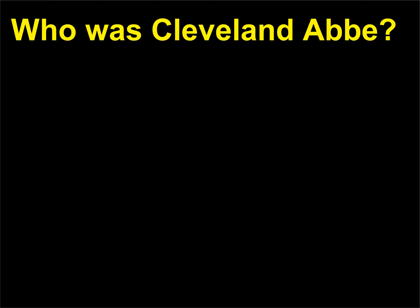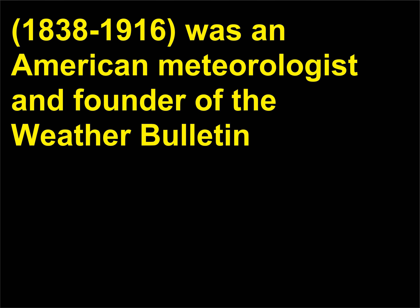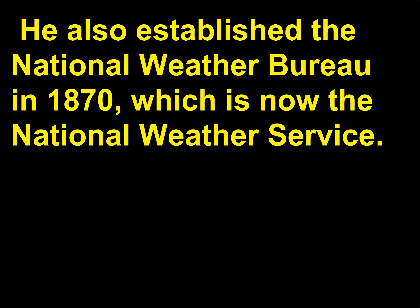Who was Cleveland Abbe? Also famous as the person who proposed the creation of time zones, Cleveland Abbe (1838–1916) was an American meteorologist and founder of the Weather Bulletin, the first daily periodical to include weather forecasts, established in 1869. He also established the National Weather Bureau in 1870, which is now the National Weather Service.